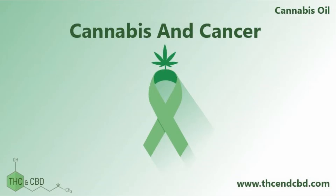Activation of either receptor leads to the inhibition of adenylate cyclase, decreased production of cyclic adenosine monophosphate, cAMP, and activation of mitogen-activated protein kinase, MAPK, and phosphoinositide-3 kinase, PI3K, pathways. CB1 receptors are found predominantly in the central and peripheral nervous systems and suppress neuronal excitability and transmitter release, leading to hypothermia, sedation, euphoria, and altered mental status.